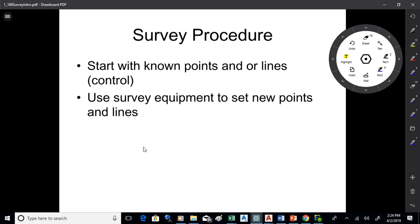Nowadays, we come off of known points on the ground or maybe satellites, which we know the position of. Generally speaking, you've got to start with control. Surveying then comes off of control and establishes the location of new points and lines.